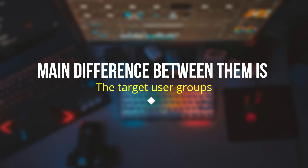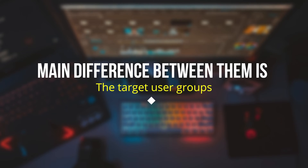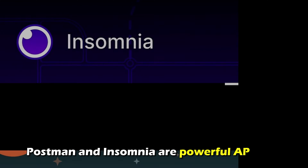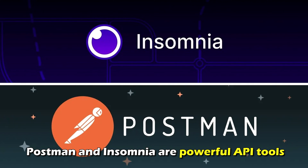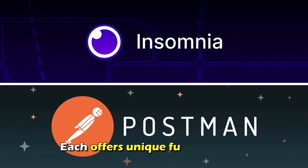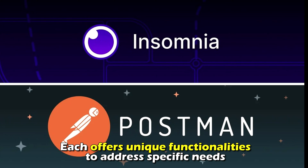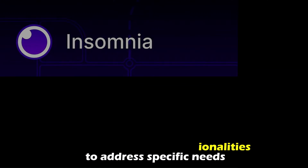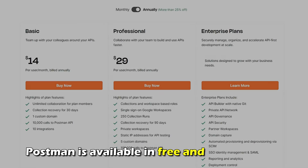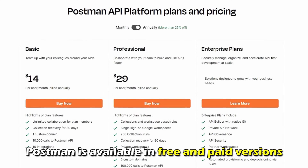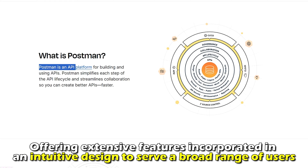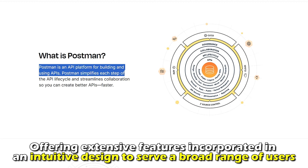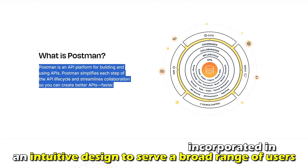The main difference between them is the target user groups. While Postman and Insomnia are powerful API tools, each offers unique functionalities to address specific needs. Postman is available in free and paid versions, offering extensive features incorporated in an intuitive design to serve a broad range of users.